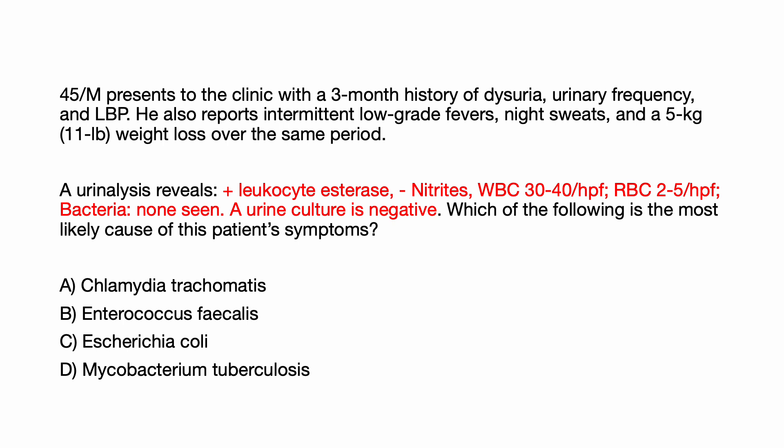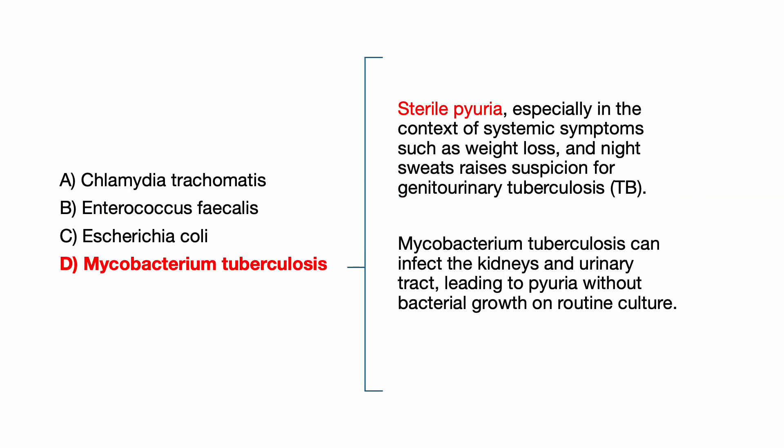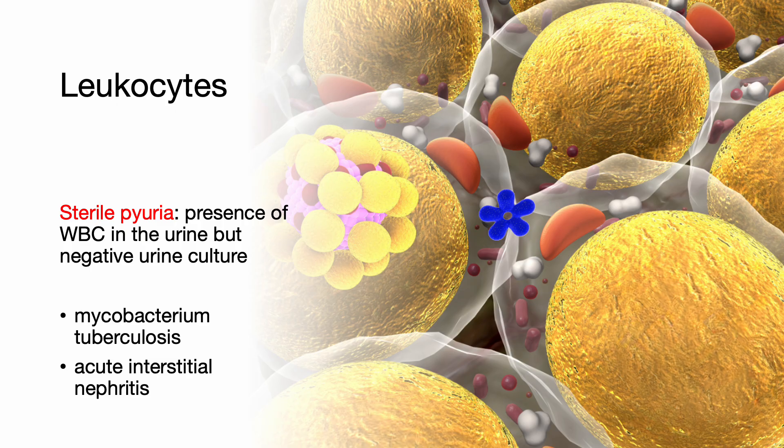Which of the following is the most likely cause of this patient's symptoms: Chlamydia, Enterococcus, E. coli, or Mycobacterium tuberculosis? The correct answer is D — sterile pyuria from Mycobacterium tuberculosis. Sterile pyuria, especially in the context of systemic symptoms such as weight loss and night sweats, raises suspicion for genitourinary tuberculosis. Mycobacterium tuberculosis can affect the kidneys and urinary tract, leading to pyuria without bacterial growth on routine culture. This patient's clinical presentation and negative urine culture point to Mycobacterium tuberculosis as the likely cause of sterile pyuria. If there is presence of WBC in the urine but the urine culture is negative, consider sterile pyuria.